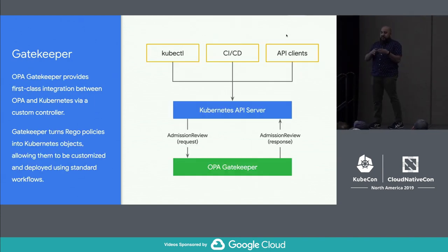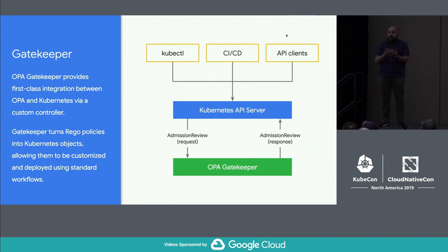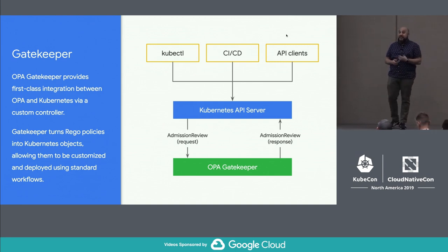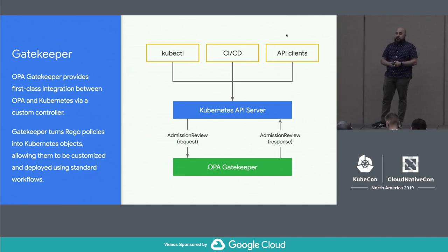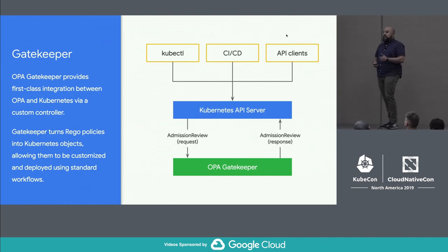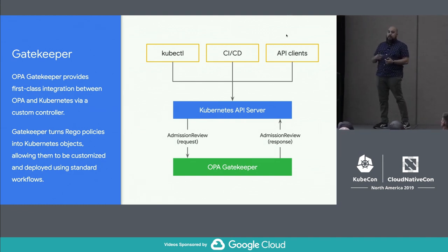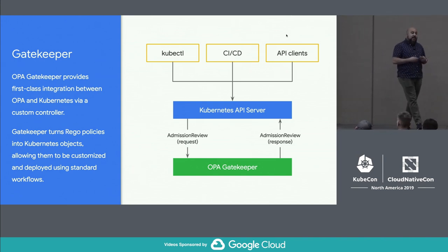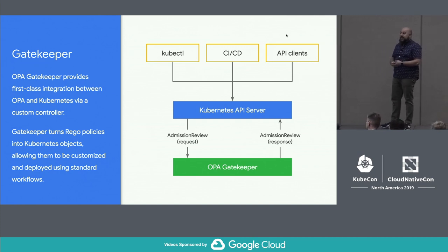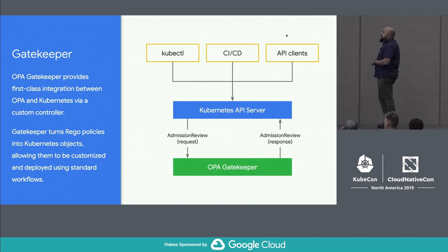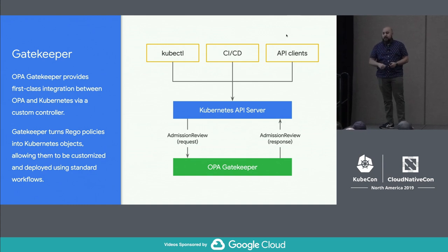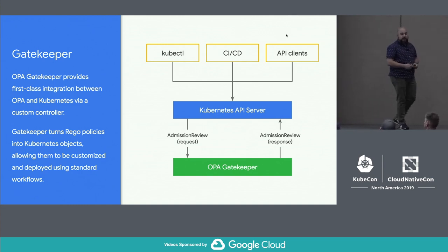Where does Gatekeeper fit in? Gatekeeper takes OPA, takes Open Policy Agent, and essentially wraps it into a Kubernetes controller — specifically a Kubernetes admission controller. It puts itself right in the critical path of when objects are entering into the cluster. It gives you the opportunity to evaluate anything coming in, anything the API is going to accept, and make a decision about what's going to happen. All standard Kubernetes tooling — kubectl, CI-CD, GitOps, generic API clients — stays the same.